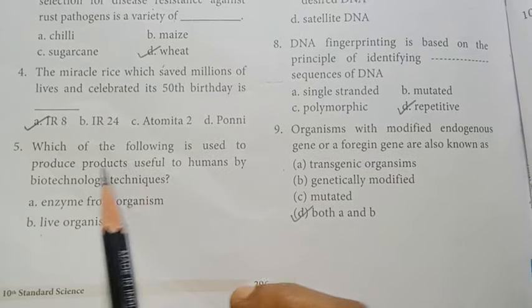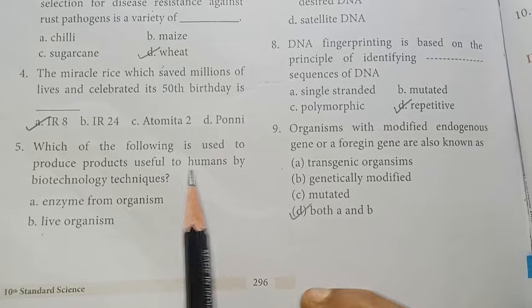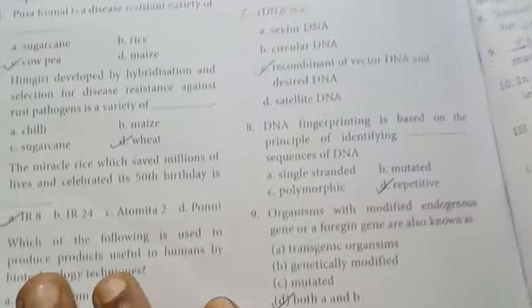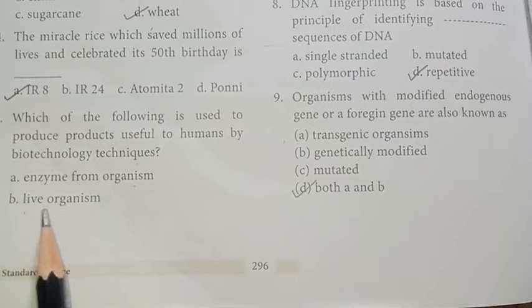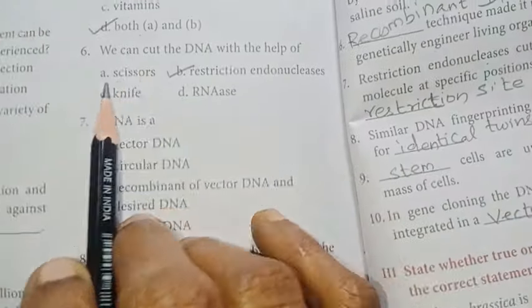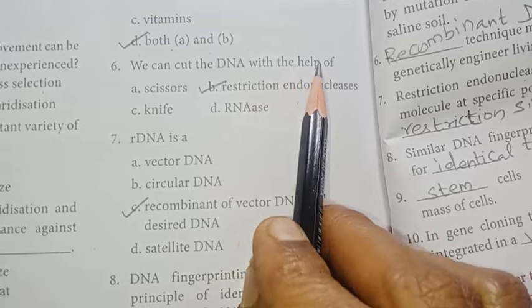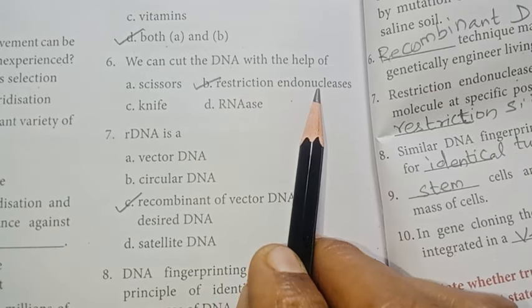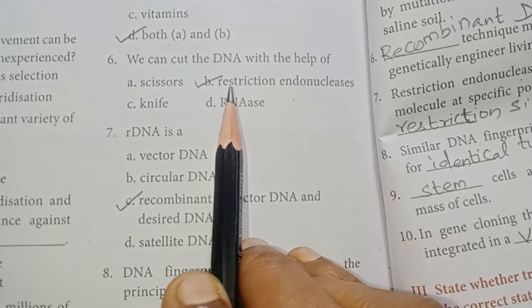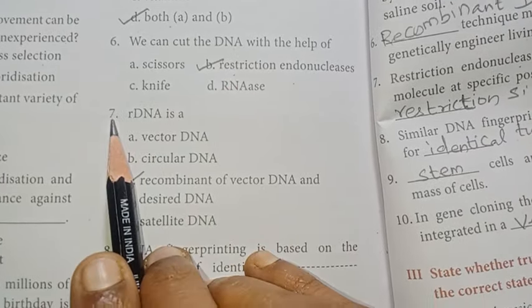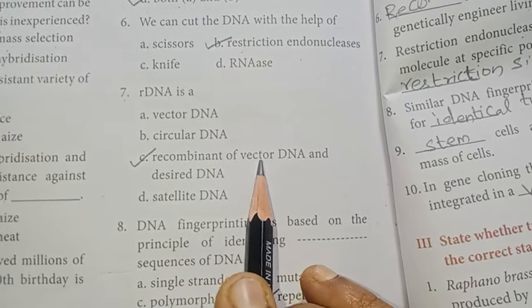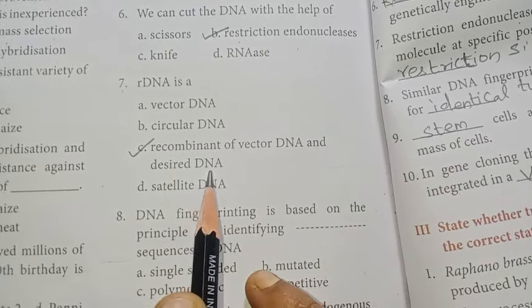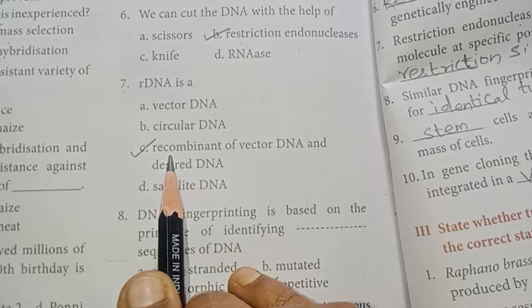Number five: Which of the following is used to produce products useful to humans by biotechnology techniques? Answer is option D: Both A and B — that is, enzymes from organisms and live organisms. Number six: We can cut the DNA with the help of restriction endonucleases. Option B is the right answer. Number seven: Recombinant DNA is a recombinant of vector DNA and desired DNA. Option C is the right answer.